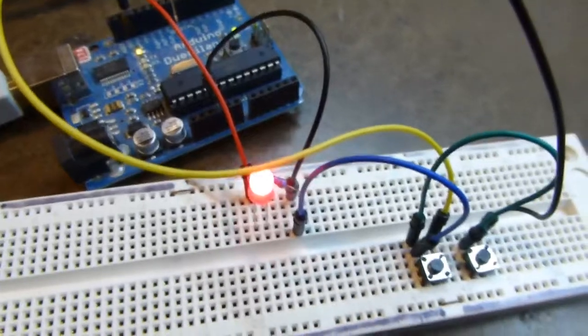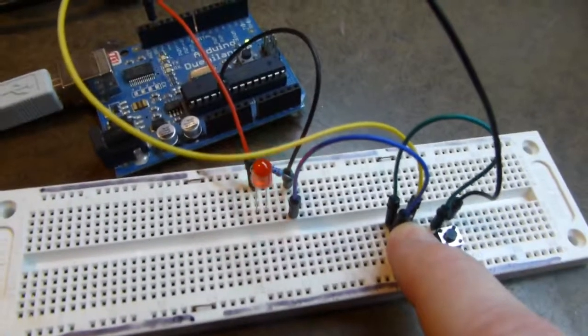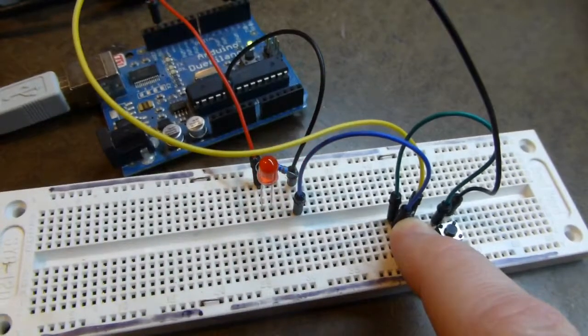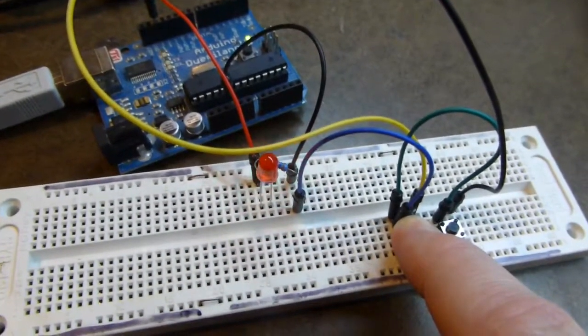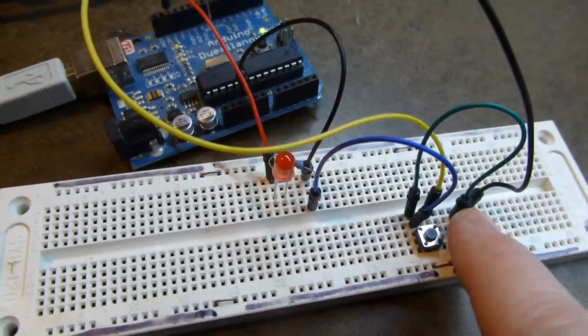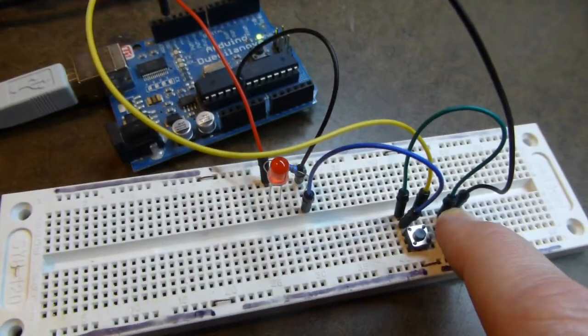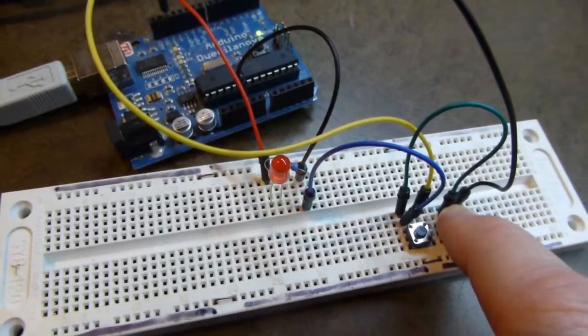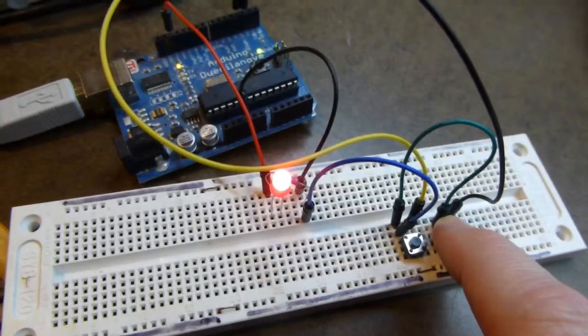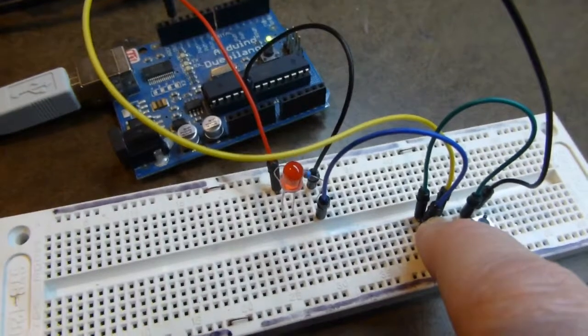So I've just reset it so it's blinking once per second as it did before. If I hold down the blink faster button then eventually it'll get to the point where it's blinking where the delay is 100 milliseconds. So it'll be blinking five times a second. Now you'll notice one problem here and that is that the way the software is written it only reads the buttons at the end of the off time just before it turns back on again.